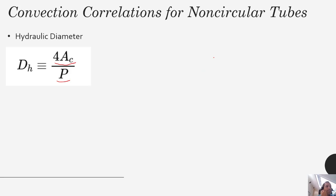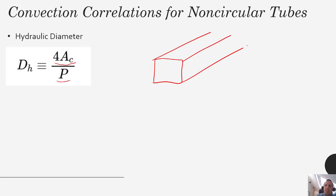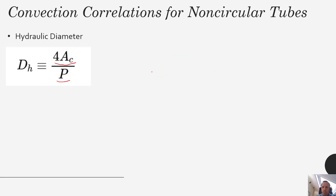Non-circular channels appear in many applications — square ducting used for HVAC, long rectangular ducts. Heat transfer is very important in those kinds of applications, so it's important to know how to handle non-circular tubes.